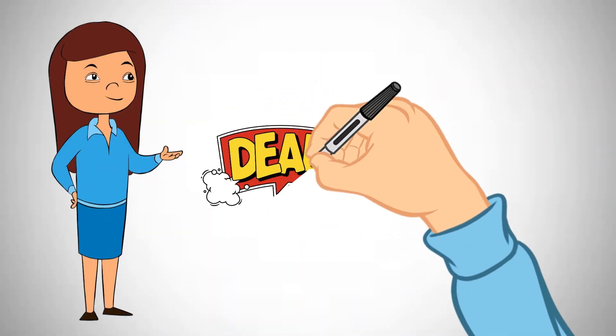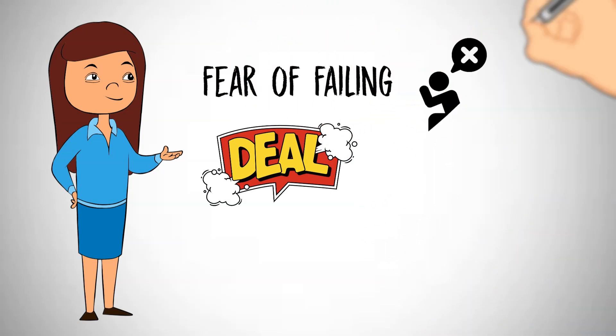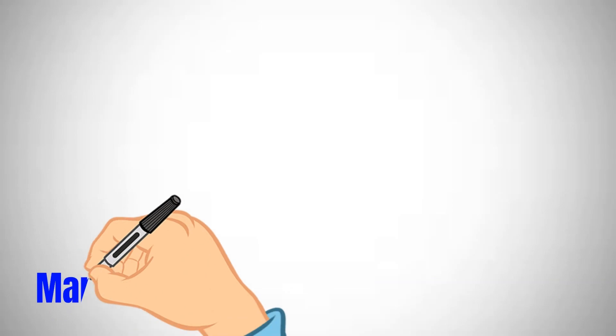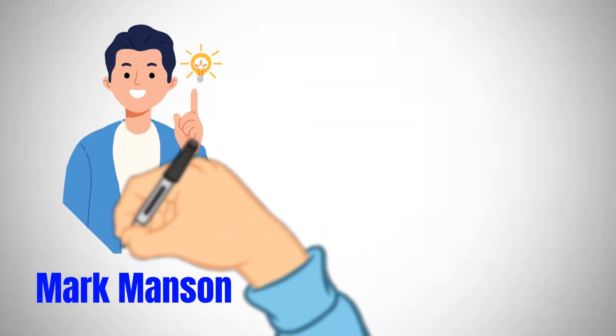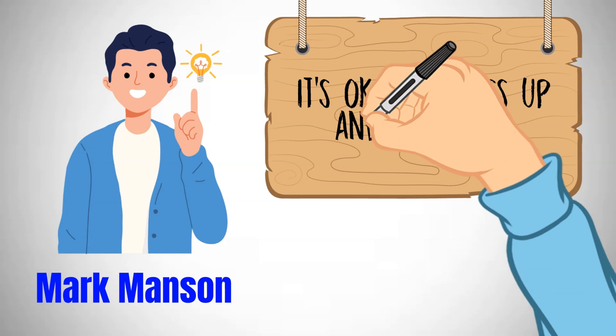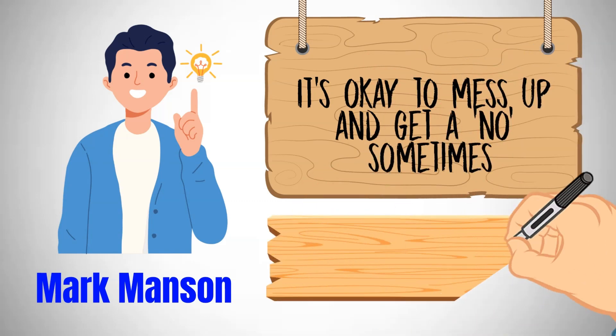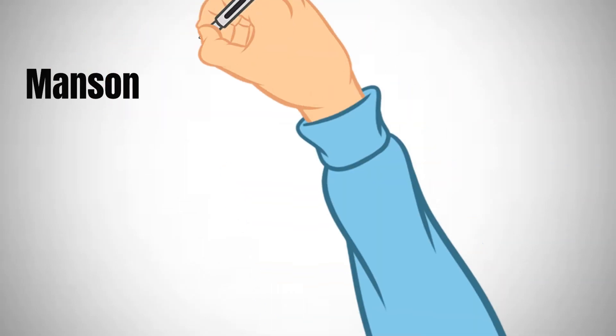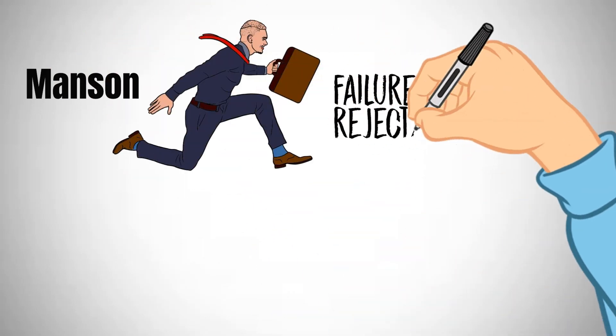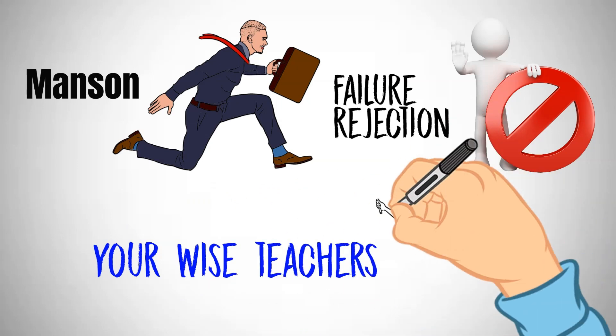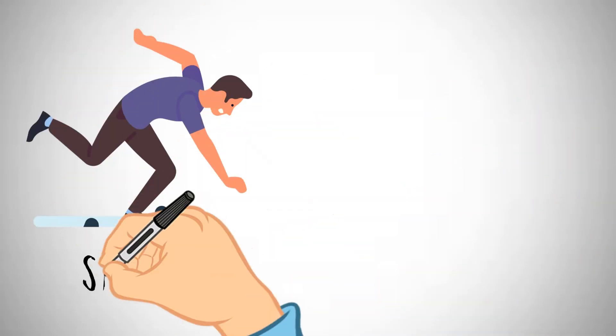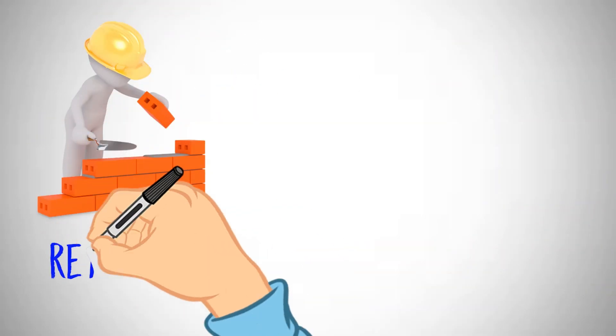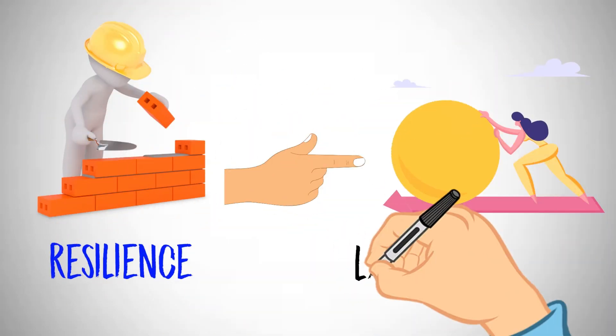Let's talk about something we all deal with: fear of failing and getting rejected. Mark Manson has a pretty cool take on this. He's like, it's okay to mess up and get a no sometimes. It's all part of the game. Manson doesn't want you to run away from failure or rejection because in his world, they're like your wise teachers. When you stumble, you learn and you get stronger. It's how you build up that resilience to tackle life's challenges.